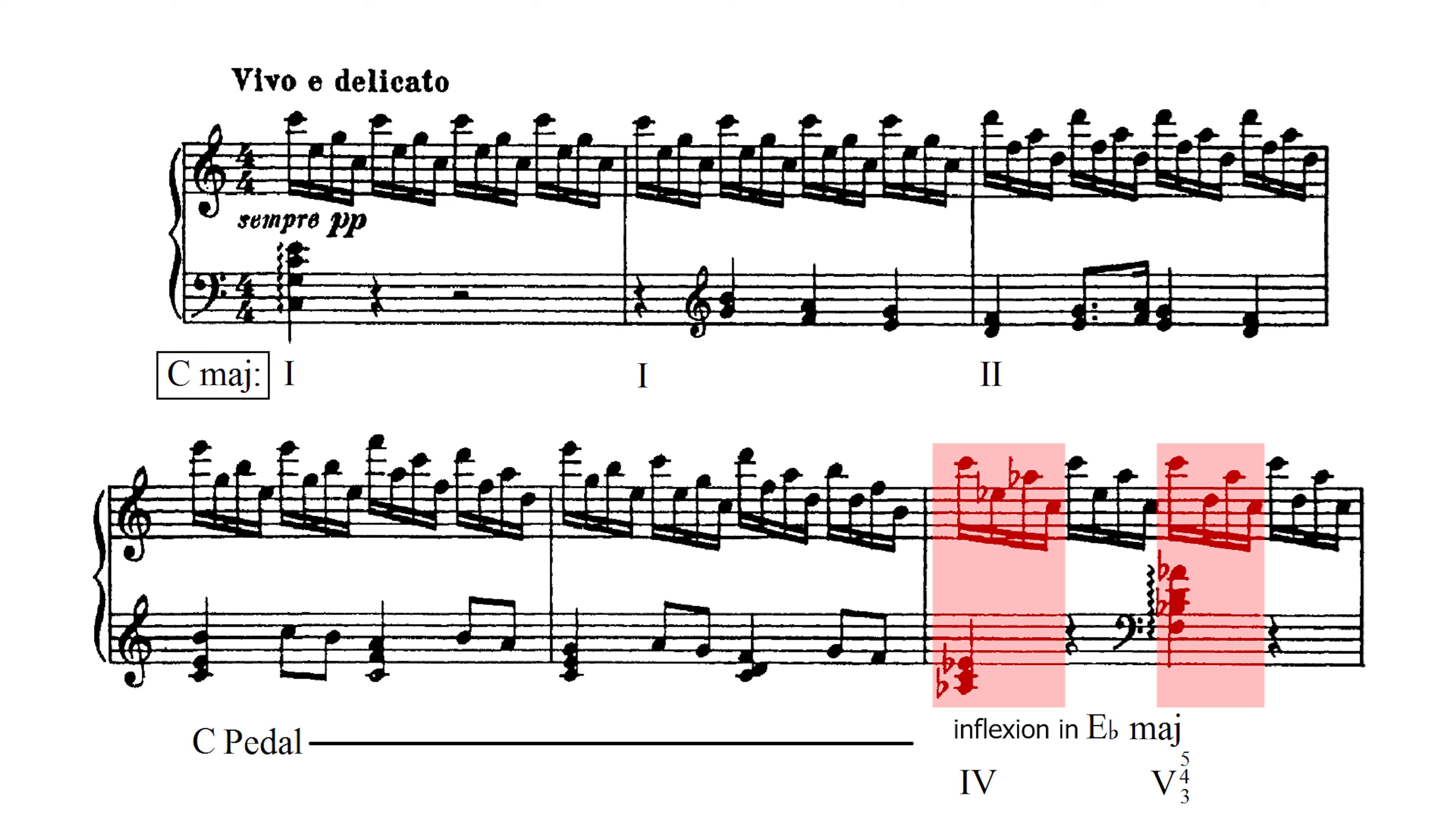There is also another way to look at this passage. Ab major is the sixth scale degree in C major, but the Moldour variant, with an altered fifth Eb, this is commonly known as borrowed harmony.